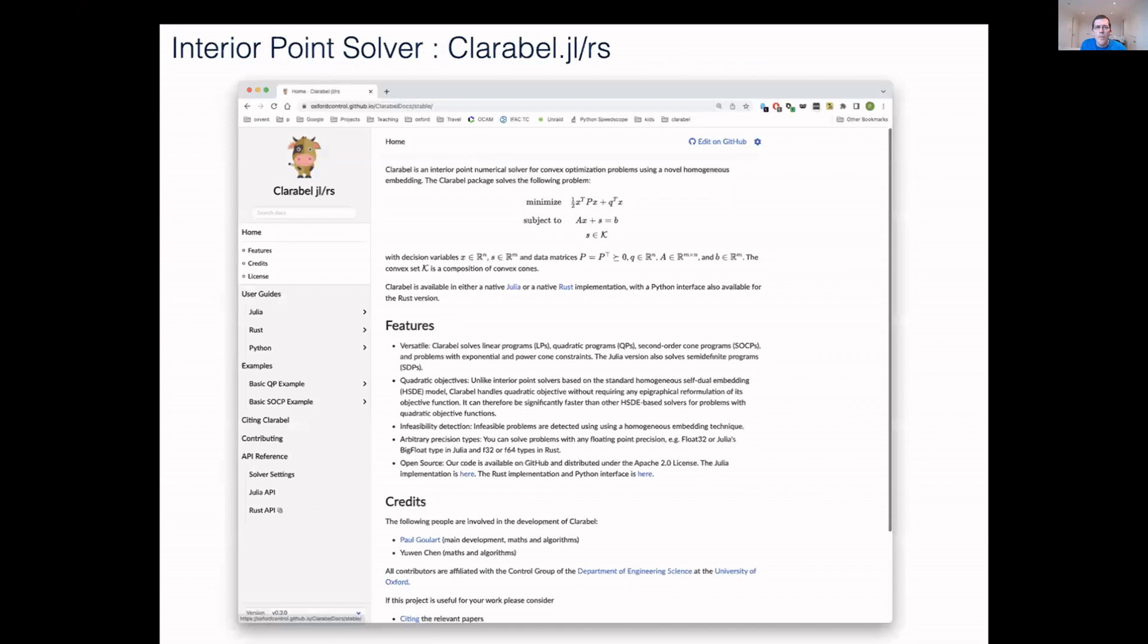So that's what we've done. We produced this package called Clarabel. You'll see it's Clarabel.jl and rs, because we have these two parallel implementations. It's public, Apache licensed. You can go and try it out.